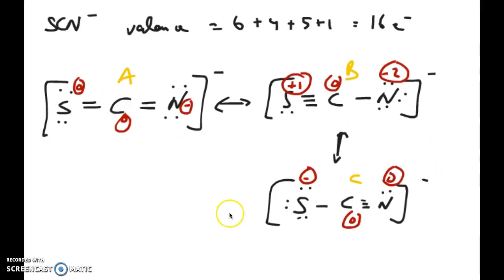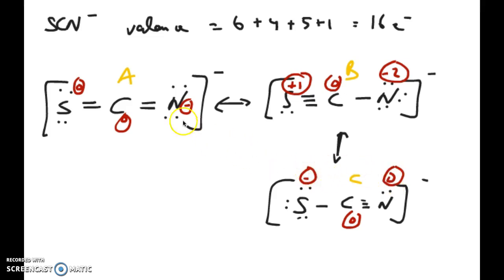With the formal charges calculated, I can apply the earlier rules. Structure B can be removed because it has two atoms with charges, whereas in A and C only one atom has a formal charge — rule one. Comparing A and C, the difference is that the minus one is either on nitrogen or on sulfur. Applying rule three, we want the negative charge on the more electronegative atom. Nitrogen is more electronegative than sulfur, so we prefer structure A.